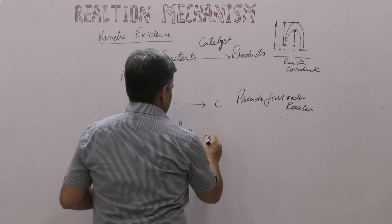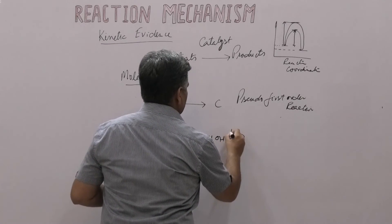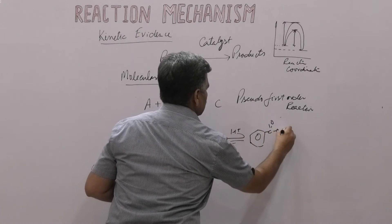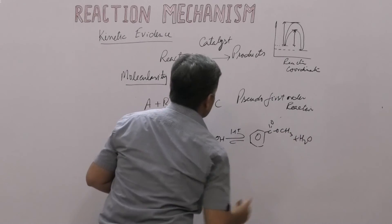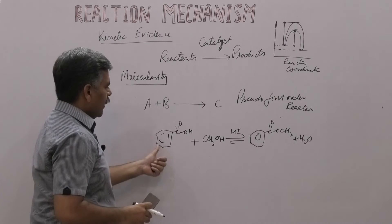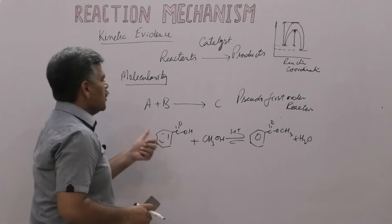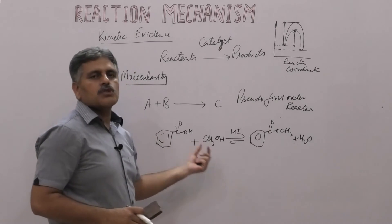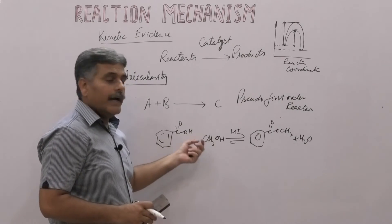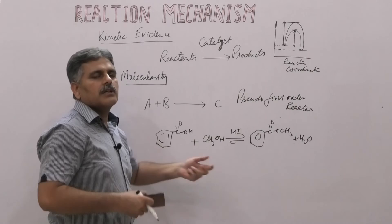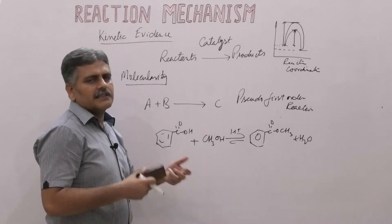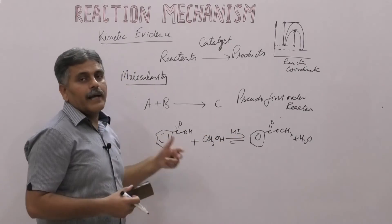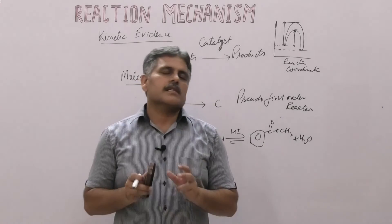For example, benzoic acid reacts with methanol or ethanol to give methyl benzoate. Benzoic acid is one reactant and methanol is the second reactant, but the rate of reaction depends only on the concentration of benzoic acid. Methanol is used both as a reactant and as a solvent, so it is present in a large amount, and its concentration does not affect the rate of reaction. This is why such reactions are known as pseudo first order reactions.